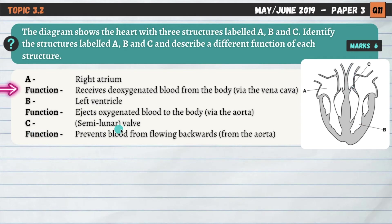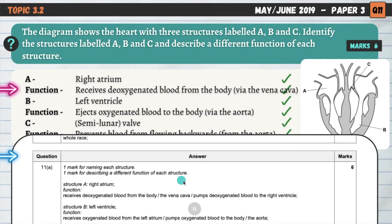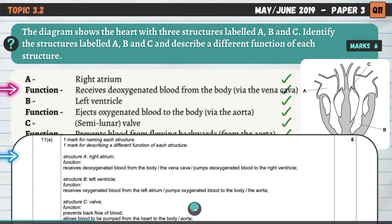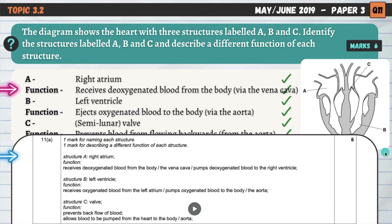Finally, C — we've got that valve, the semilunar valve at the entrance to the aorta. Its purpose: it prevents blood from flowing backwards from the aorta and back into the ventricle. We only want blood to go in one direction, and that valve prevents that from happening. You can pause the video to look through the mark scheme if you wish.